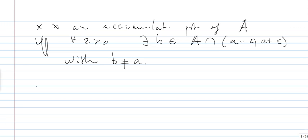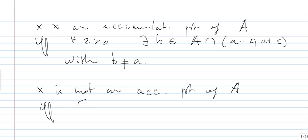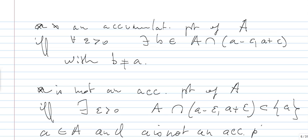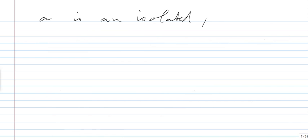What does it mean that x is not an accumulation point of A? Taking the negation: there exists ε such that A intersected with (x − ε, x + ε) does not contain any element different from x — in other words, it is a subset of {x}. In particular, if a belongs to A and a is not an accumulation point of A, then a must be an isolated point of A.